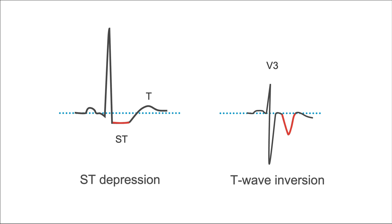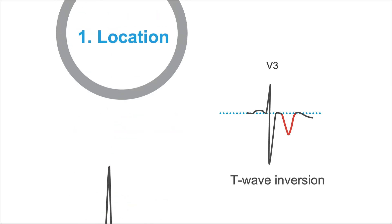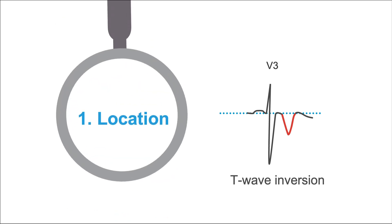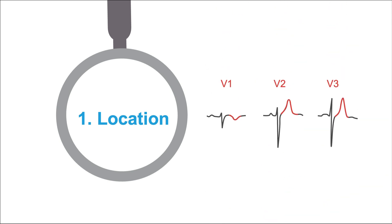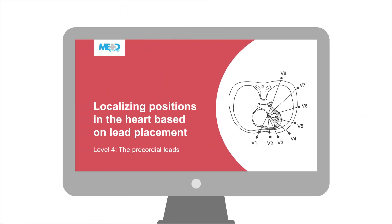Now that you know what ST-depressions and T-wave inversions are, what can you say about them that will help you come up with the right diagnoses? There are two things you can look at: the location of the ST-depression or T-wave inversion, and the shape. You look at the leads that have the changes and know what part of the heart is affected. If you need a quick revision of where each precordial lead is located, go back to level four, lesson two.